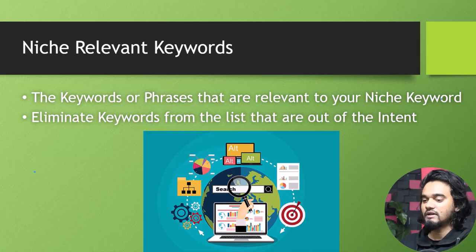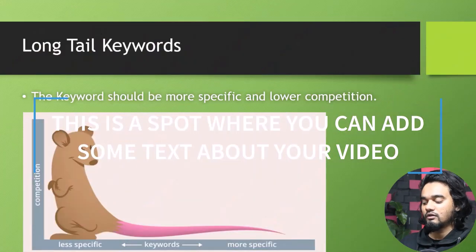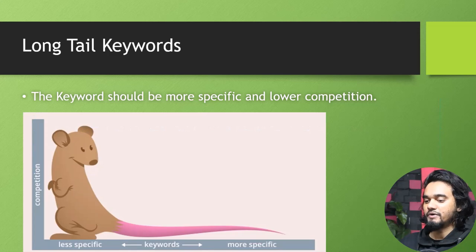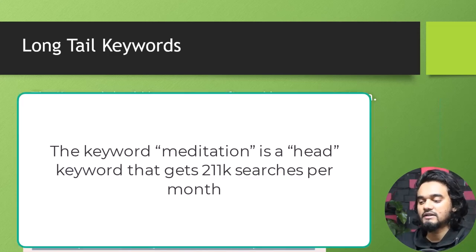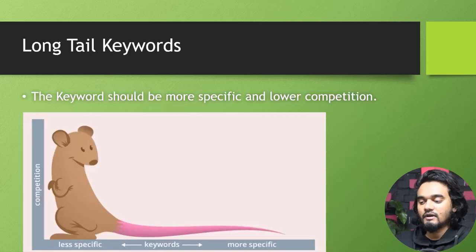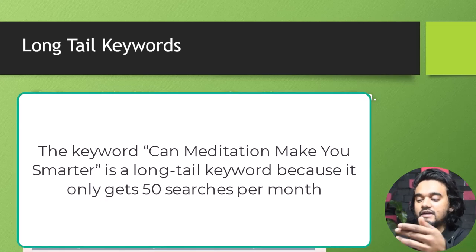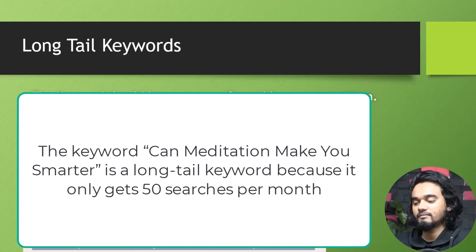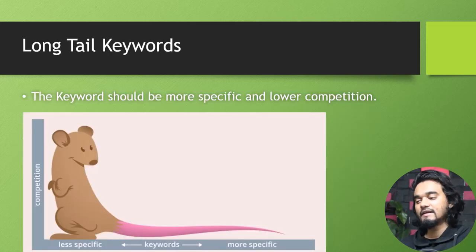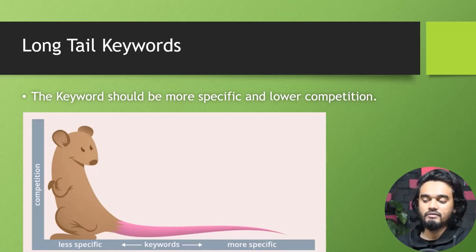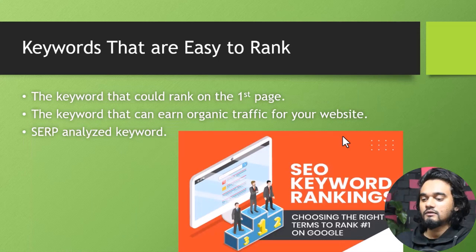Number four: long-tail keywords — the keyword should be more specific and low-competition. For example, the keyword 'meditation' is a head keyword that gives 211K searches per month, whereas 'can meditation make you smarter' is a long-tail keyword because it only gives 50 searches per month. Basically, a long-tail keyword will be lower in competition and more specific.